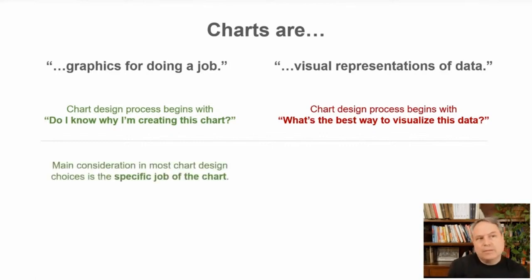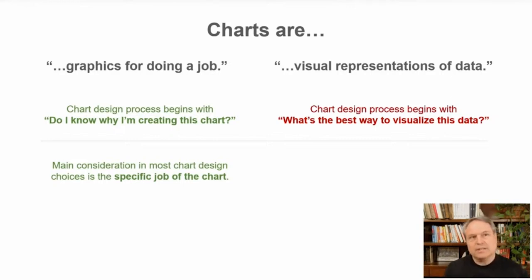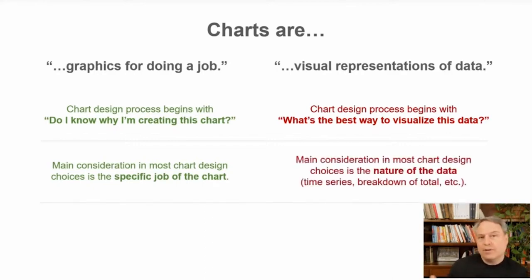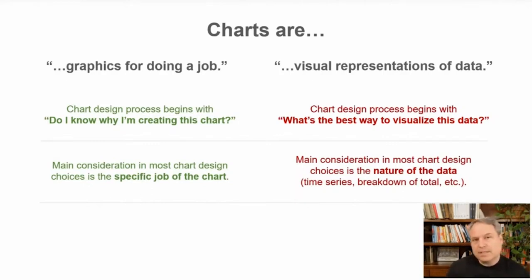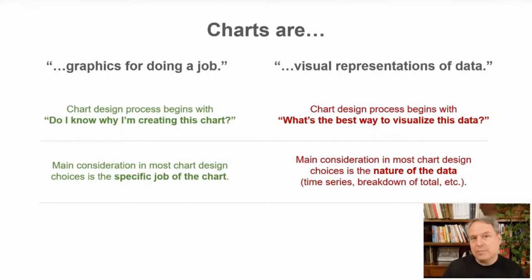You want to start with the purpose of the chart, not necessarily the data. If we think of charts as graphics for doing a job, the main consideration in most design choices is going to be the specific job of the chart. When choosing a chart type, a color palette, or how wide or narrow to make the scales — the job of the chart is at the center of those decisions. Whereas if we think of charts as visual representations of data, the main consideration is the nature of the data — whether it's a time series, a breakdown of a total, or distributions of values. The nature of the data constrains our design choices, but there are always many possibilities that remain.